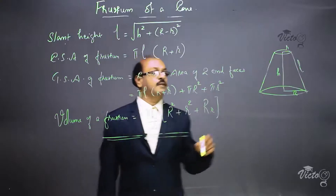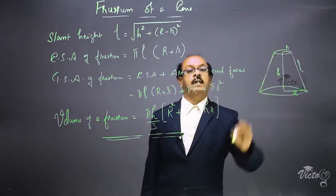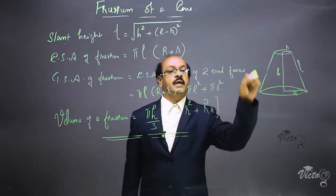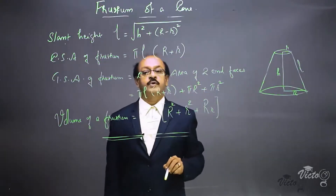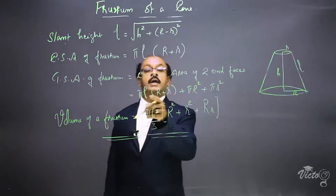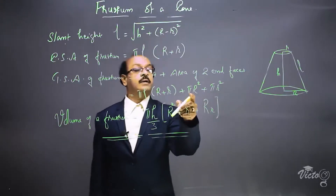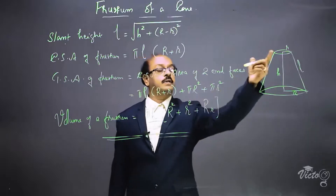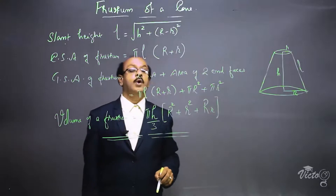For the total surface area, we add the CSA and the areas of the two end faces — the larger face and the smaller face. Therefore, TSA = π·l·(R + r) + π·R² + π·r², where π·R² is the area of the larger face and π·r² is the area of the smaller face.